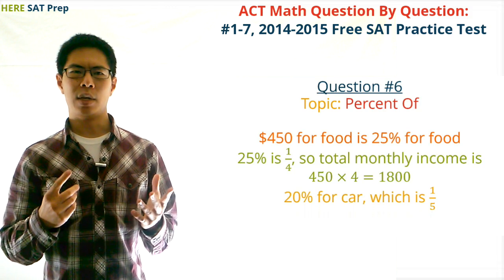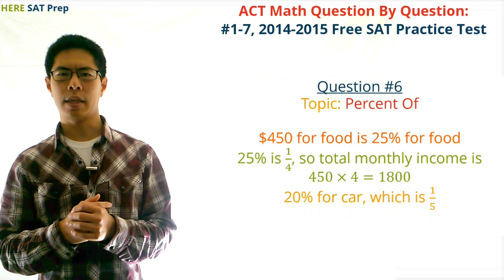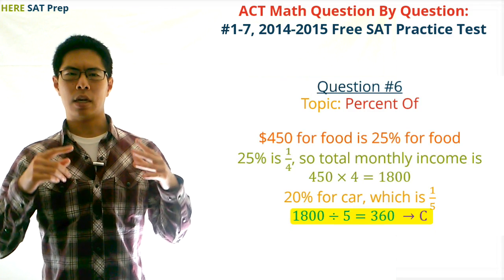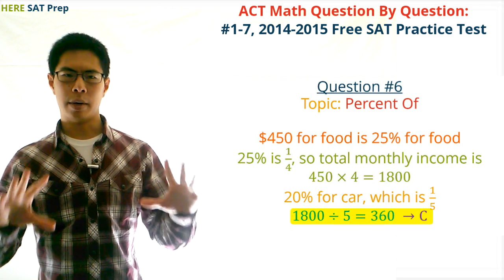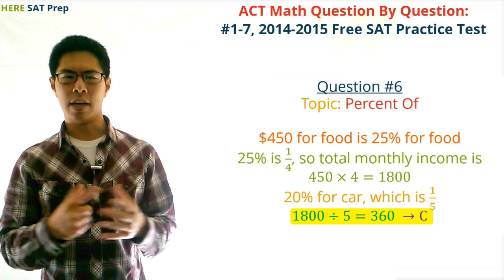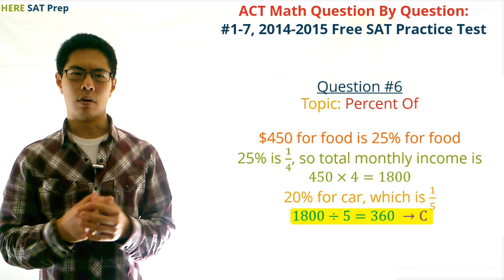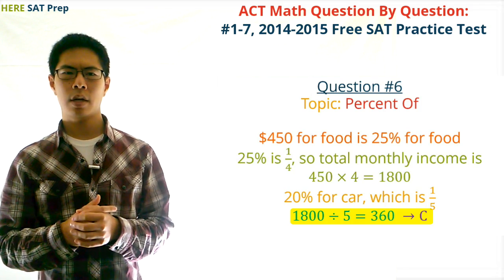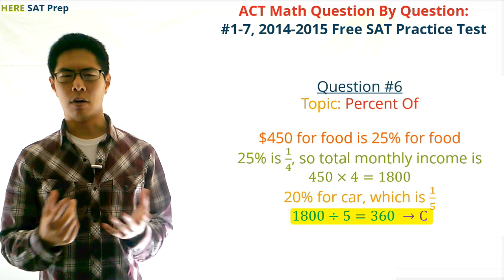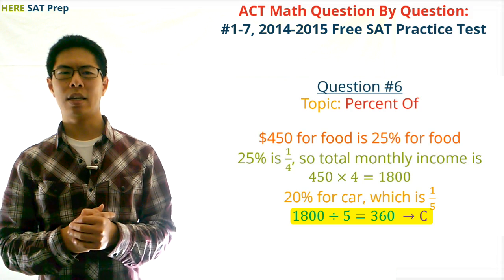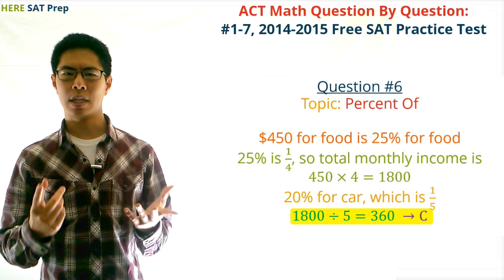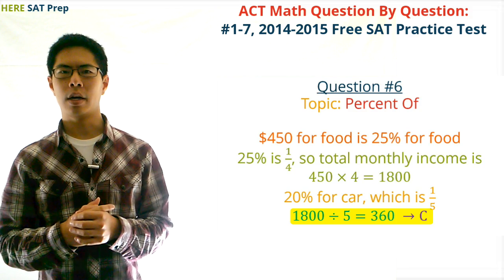Next, we need to find how much David spends per month on his car. From the pie chart, David spends 20% of his total monthly income on his car, which is the same as one-fifth. So we simply divide $1,800 by 5 to get $360. David spends $360 per month on his car, so our answer is C, $360.